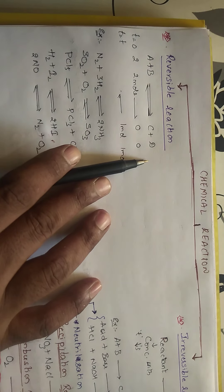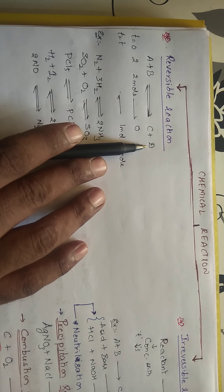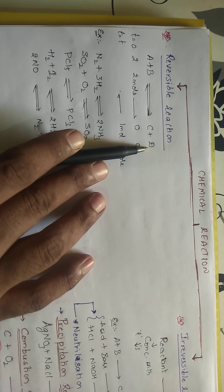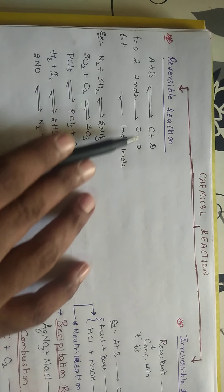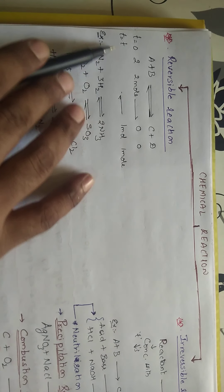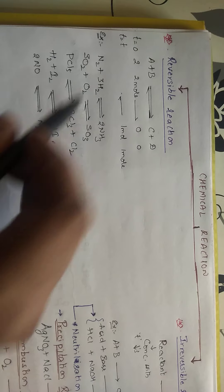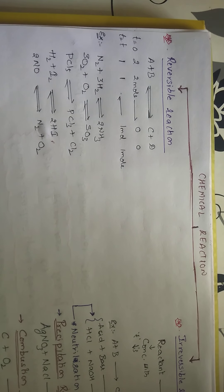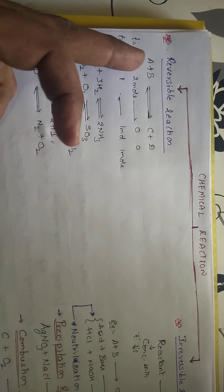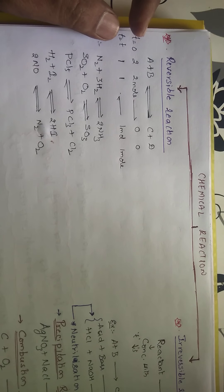Let us go for the reversible reaction. Assume that there are reactants A plus B getting converted into products C plus D. At starting time, if I have taken two moles of A and two moles of B, you will not be having products. After some time T, the reactants will be getting converted into products — say one mole each — and one mole of each reactant will be left. After the formation of the product, the product also tries to get converted back into the reactant. When this type of condition exists, those reactions are called reversible reactions.